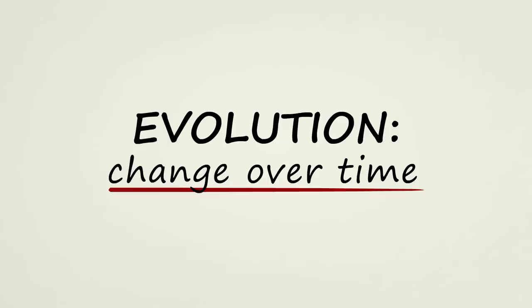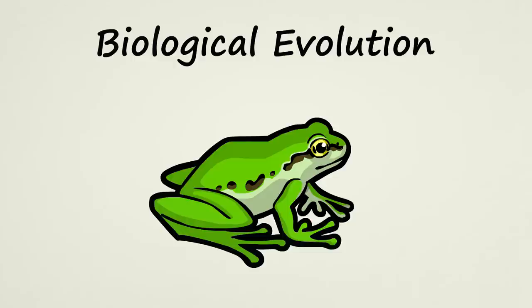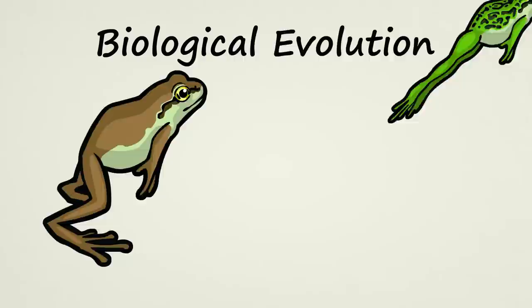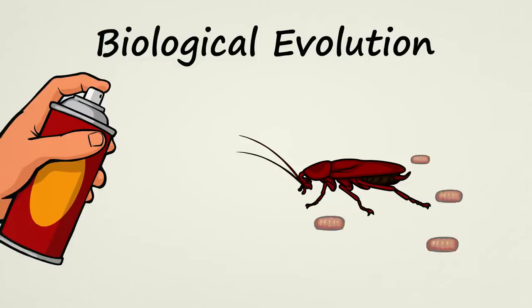The word evolution simply means change over time. Biological evolution deals with changes in things which are able to reproduce. Living creatures make copies of themselves. The change over time that we see in biological evolution is not just random change. Oftentimes, it is adaptive change.